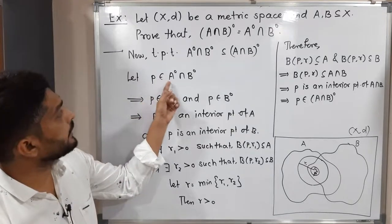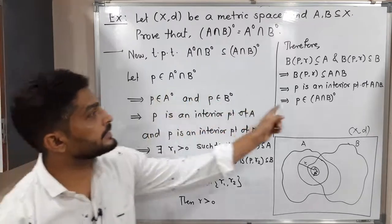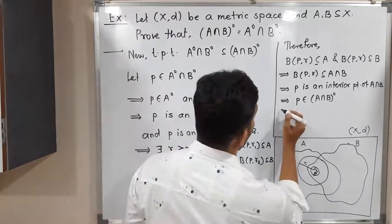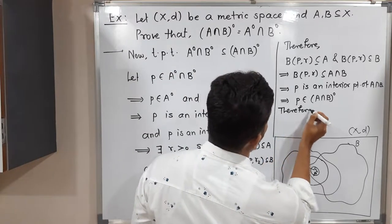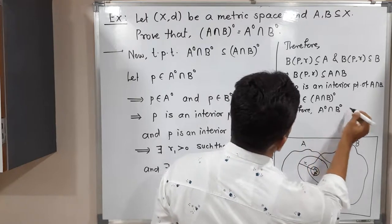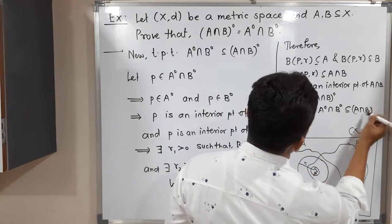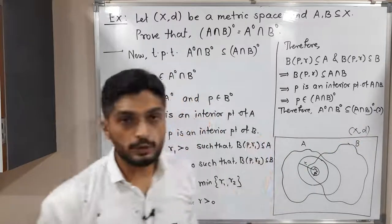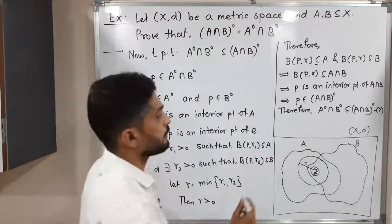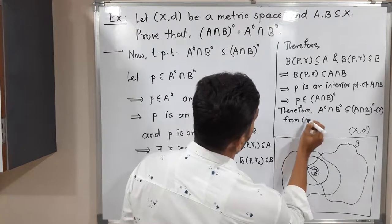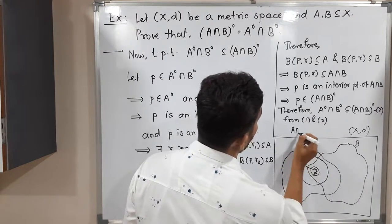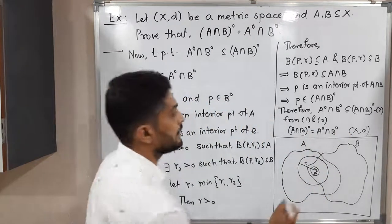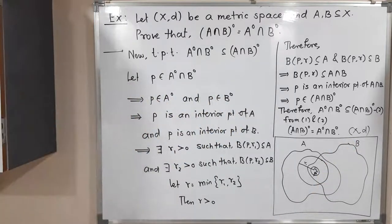We had taken point P from the interior of A intersection the interior of B, and we proved it belongs to the interior of A intersection B. Therefore the interior of A intersection the interior of B is a subset of the interior of A intersection B — call this (2). From (1) and (2) combined, both sets are equal: the interior of A intersection B equals the interior of A intersection the interior of B. In this way we prove this result.